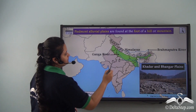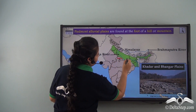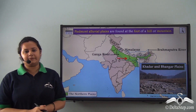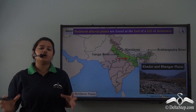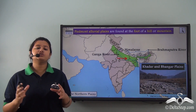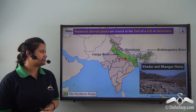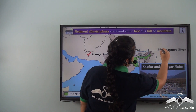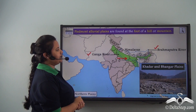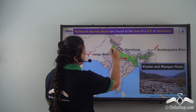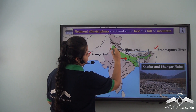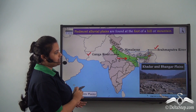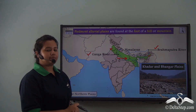The northern plains of India, located here on the map, is an example of an alluvial plain. The northern plains are formed due to the depositional work of rivers like the Ganga and Brahmaputra. As you can see in this map, this region extending from here to here is drained by the Ganga and Brahmaputra rivers.